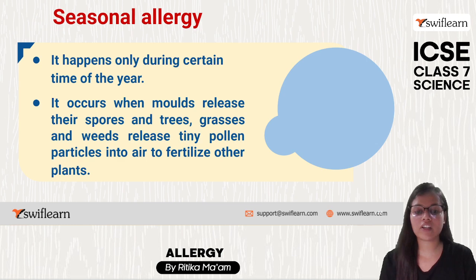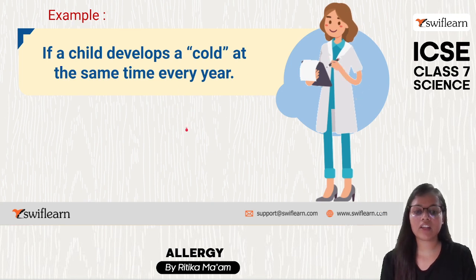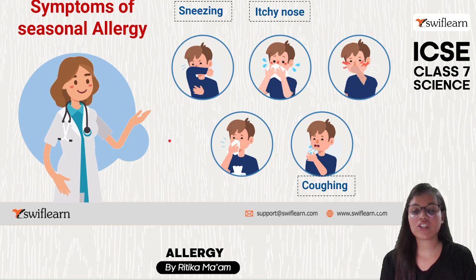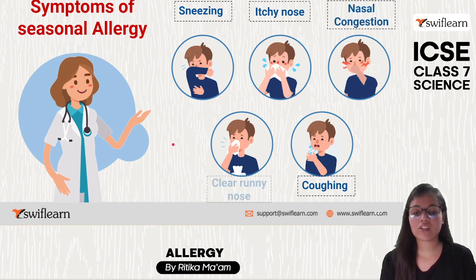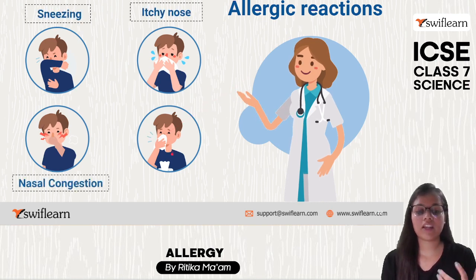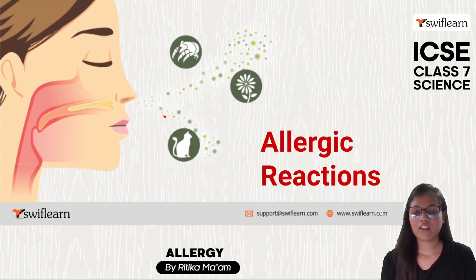Seasonal allergy occurs when molds release their spores, and trees, grasses, and weeds release tiny pollen grains into the air to fertilize other plants. If a child develops a cold at a particular time every year, that becomes seasonal allergy. Symptoms include coughing, sneezing, itchy nose, nasal congestion, and clear runny nose.